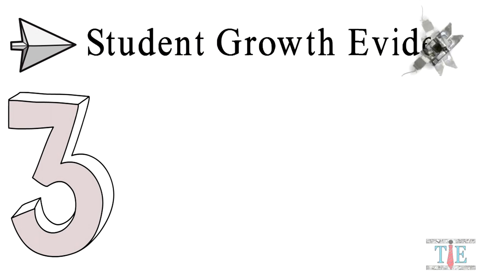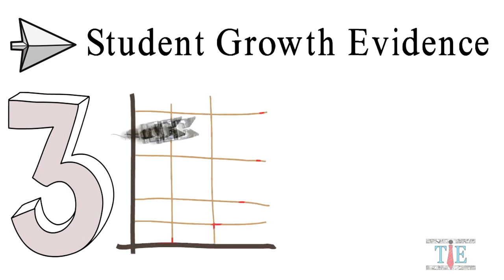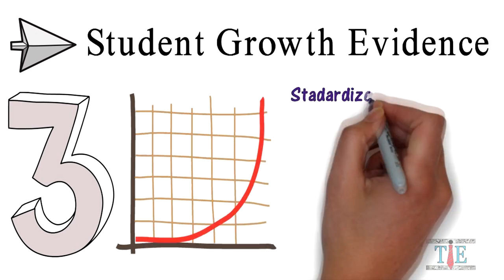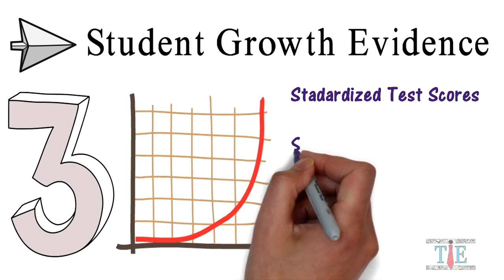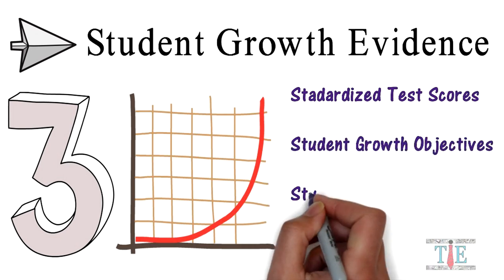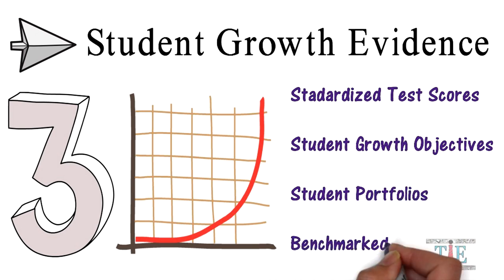Tip number three, and this is an important one: provide evidence of student growth. Schools want actual proof that you can help students achieve success in the classroom. Some schools may even ask in advance for you to provide the evidence. Examples include standardized test scores, student growth objectives, longitudinal student portfolios, and classroom benchmark data.